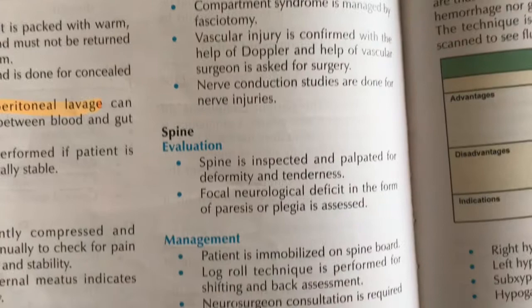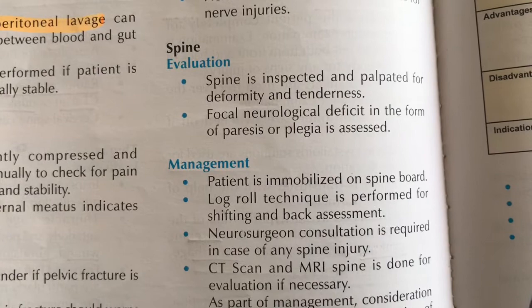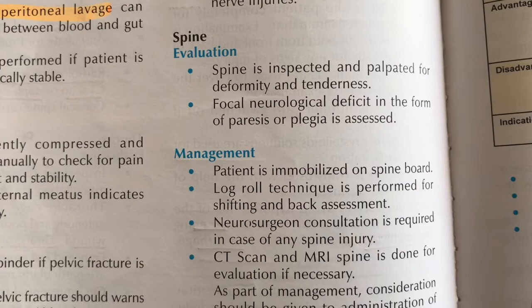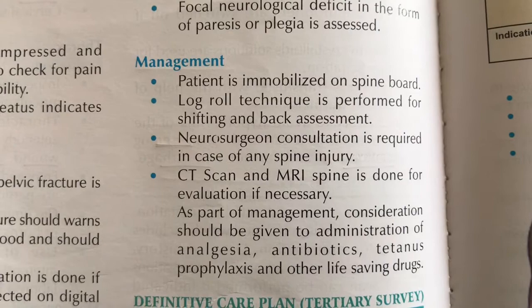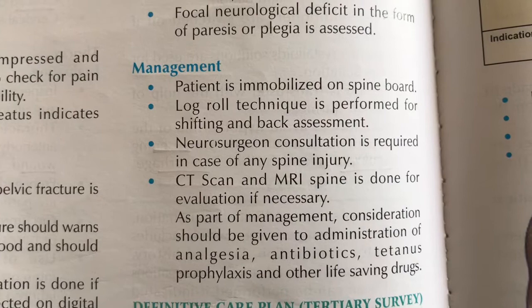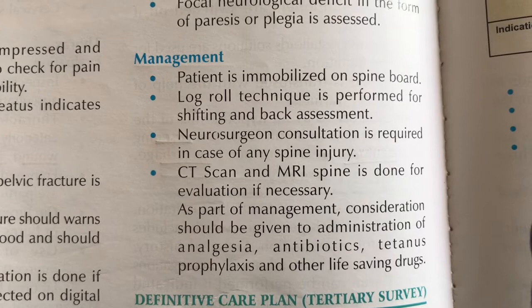The spine is inspected and palpated for deformity and tenderness. Focal neurological deficit in the form of paresthesia or paralysis is assessed. The spine is immobilized on a spine board. The log roll technique is used for movement and back assessment. A neurosurgeon is consulted for any spine injury. CT scan or MRI of the spine is performed.